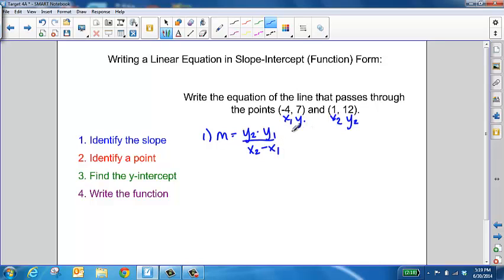Then you're going to substitute in all of the different values from your two points. As you go through and work this out, you end up with 5 in your numerator, and then this is going to change to adding the opposite, so 5 in your denominator. When you divide that out, you get a slope of 1.